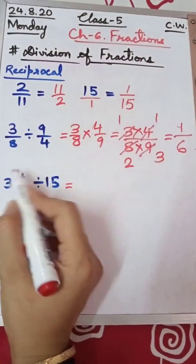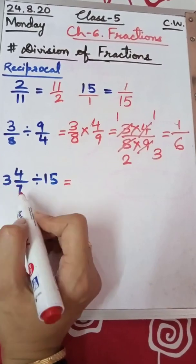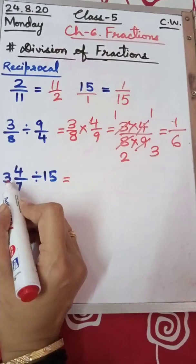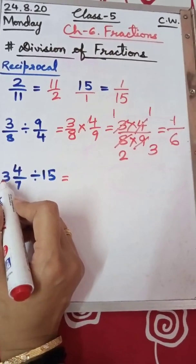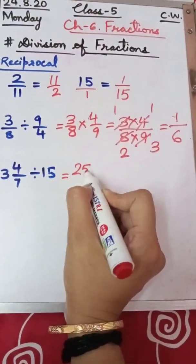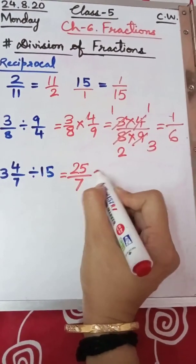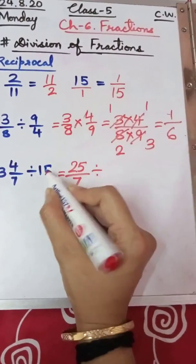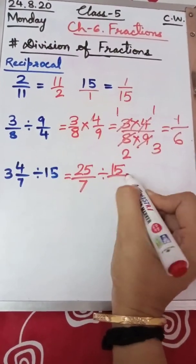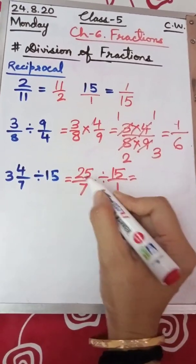What if we are given a mixed fraction and a whole number — how will we divide them? It is the same way. We will convert the mixed fraction into an improper fraction. So we will multiply 3 and 7 — seven 3s are 21, 21 plus 4 is 25. I have written 25 upon the same denominator 7, division sign, 15. To be turned as a fraction — how will you write 15 as a fraction? 15 by 1.